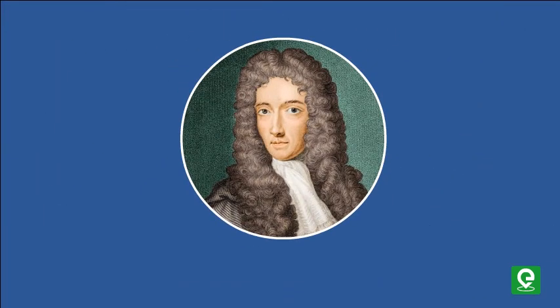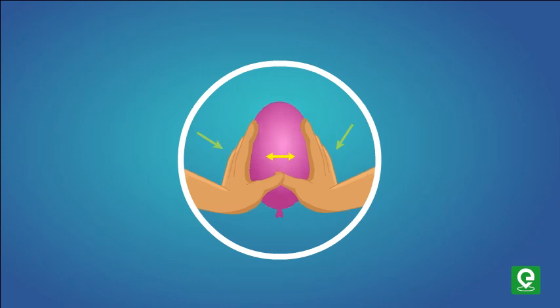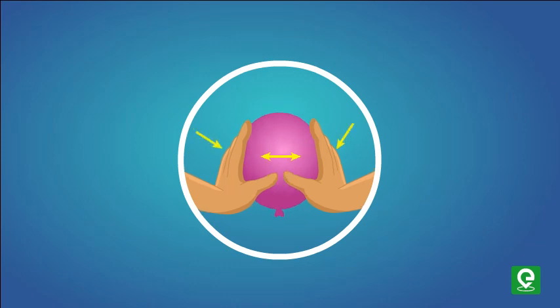Robert Boyle, an Anglo-Irish physicist, found a relationship between pressure and volume of gases. Boyle's law states that if you take a balloon filled with air and try to squeeze it with your hands, you will see its size decreasing.